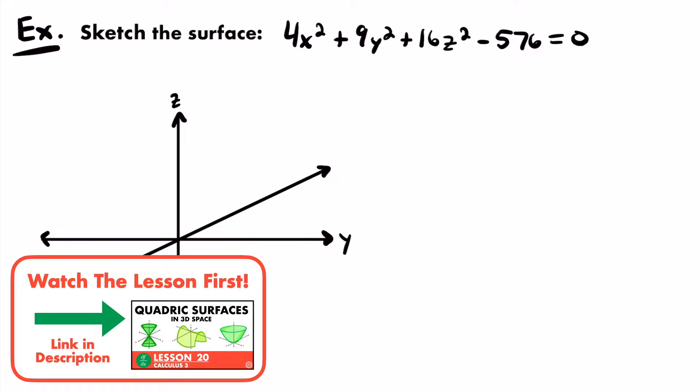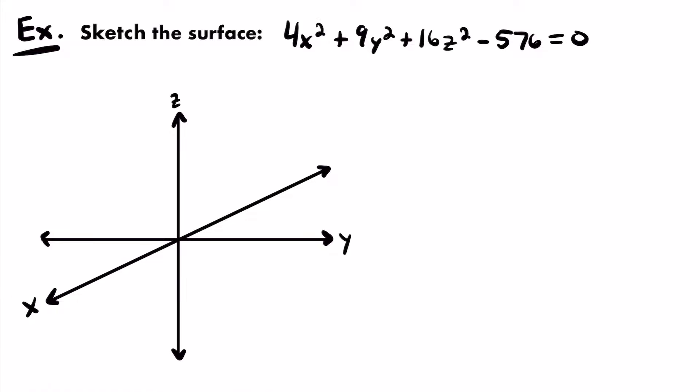The first thing we have to do before we can sketch this surface is identify the type of surface that this equation represents. For one thing, we know it's not going to be a cylinder. Cylinder equations only involve two variables. This equation involves three, and that will be the case for all of these examples because we are going to be sketching quadric surfaces, not cylinders.